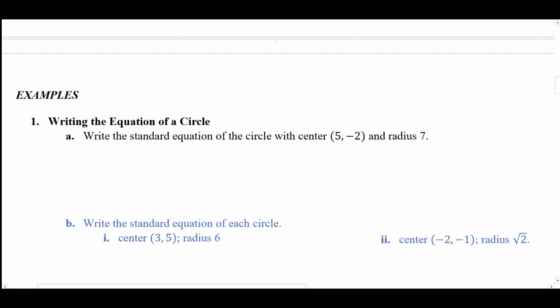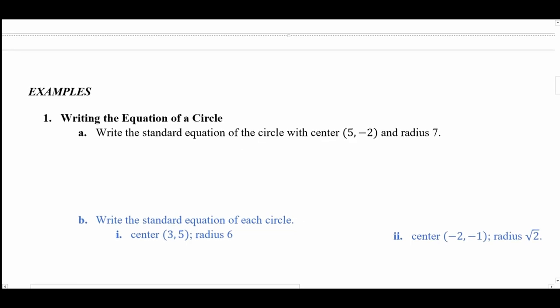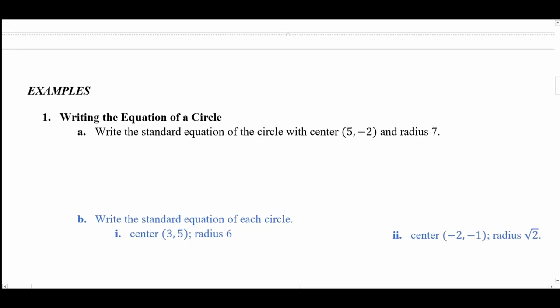Example 1, Part A: writing an equation of a circle. Write the standard equation of a circle with center located at (5, −2) and radius r. Since the center is (h, k), we know that h = 5, k = −2, and we are given r.